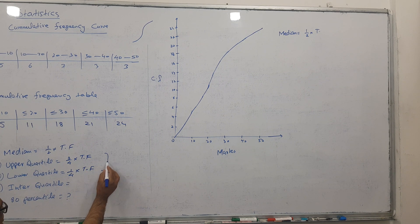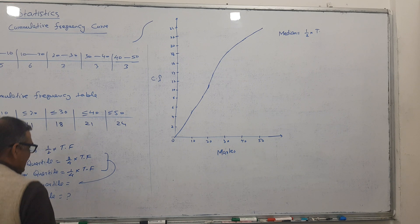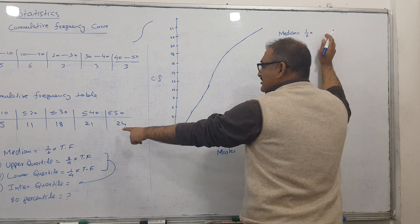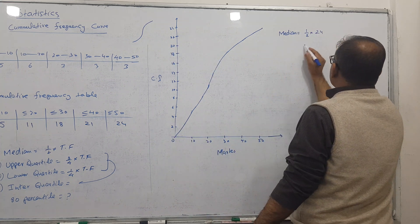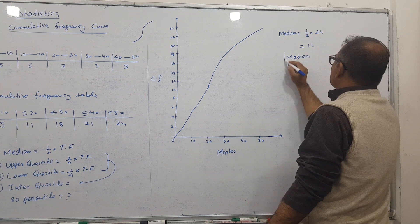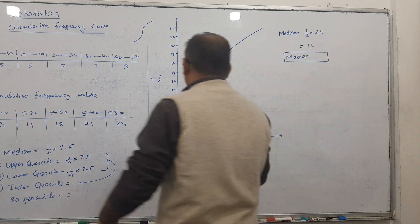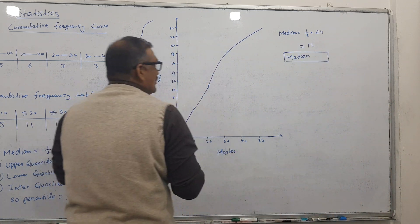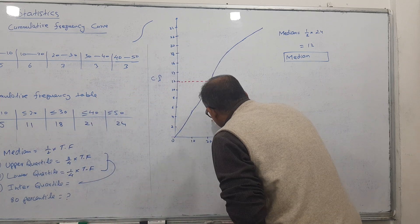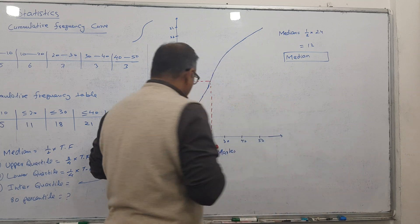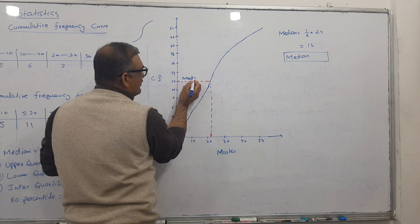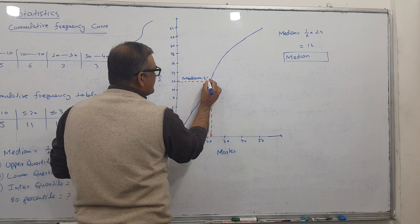Let's find the median first. Half of total frequency: ½ × 24 = 12. But 12 is not the answer — 12 is the pointer. So from 12 on the y-axis, go across to the graph and come down. The value is approximately 22. So the median is 22 marks.